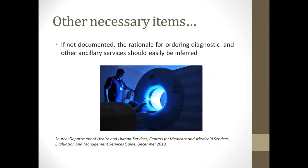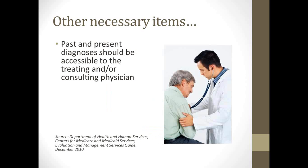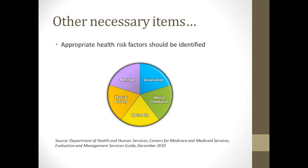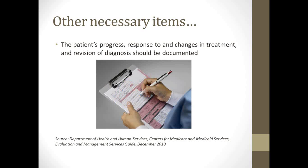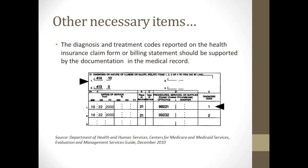If it's not documented, the rationale for ordering diagnostic and ancillary services should be easily inferred. Past and present diagnoses should be accessible to the treating and consulting physician. Appropriate health risk factors should be identified, and a patient's progress, response to and changes in treatment, and revision of diagnosis should be documented. Diagnosis and treatment codes reported on the health insurance claim form should be supported by the documentation, and the OIG requests that you audit your medical records and compare them to what was billed — including diagnosis codes, CPT codes, time noted, and details supporting what was billed.